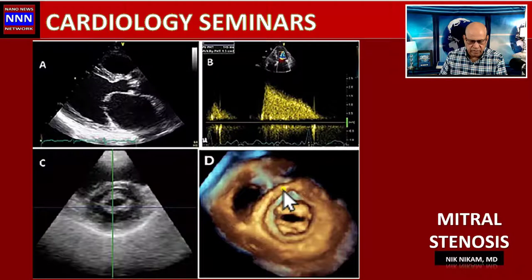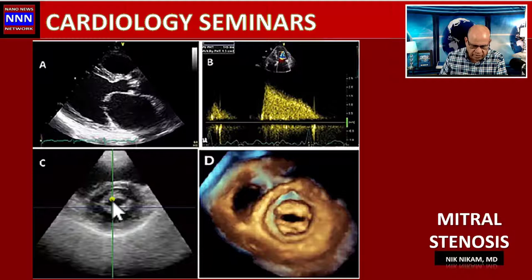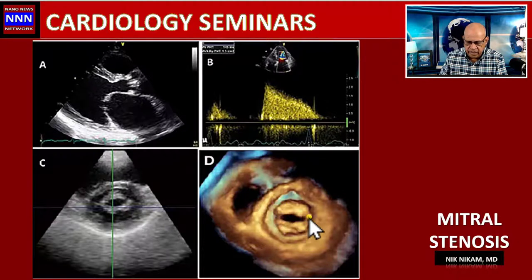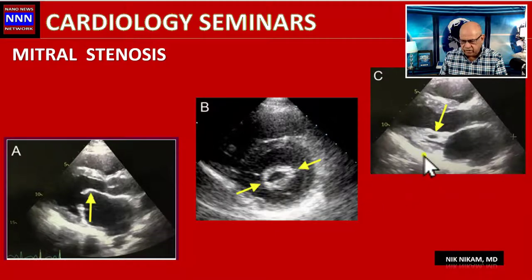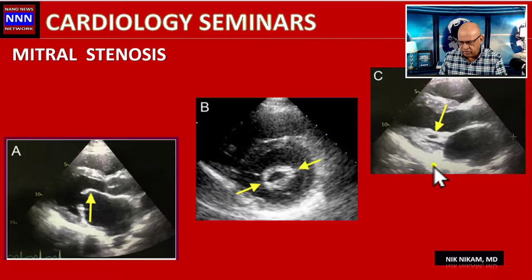Here is another example of the doming effect of the mitral leaflet. Depending on where the slice is taken, results will vary — a slice at the edges gives a significantly narrowed orifice. Here is the anterior leaflet with its orifice planimetered. And here is a different example showing extensive fibrotic changes with severely restricted movement of the mitral leaflets.